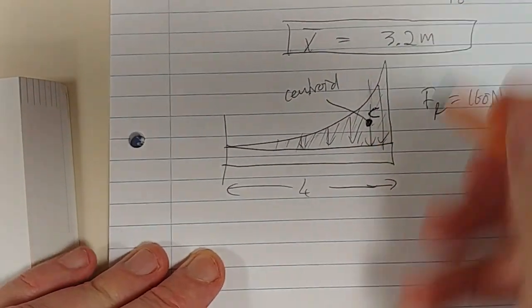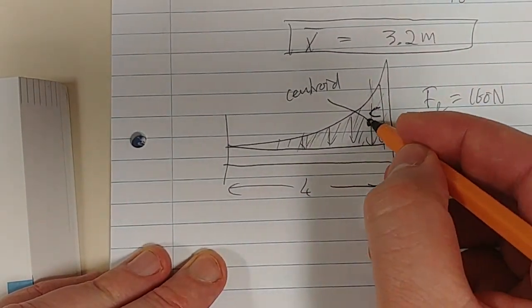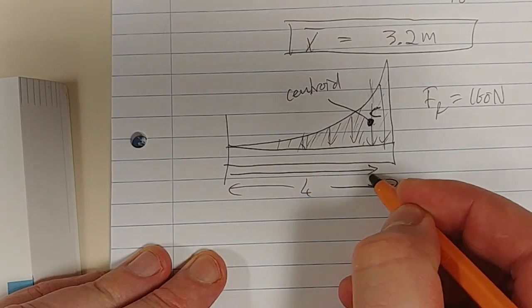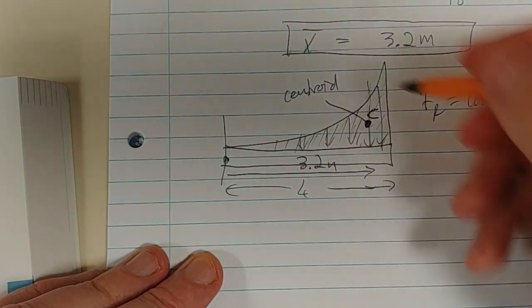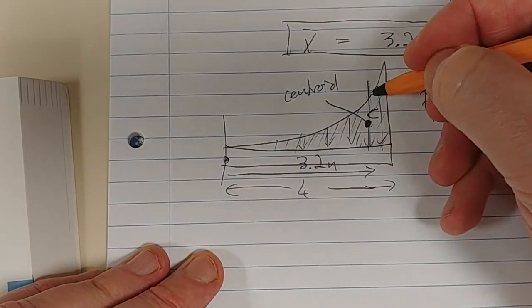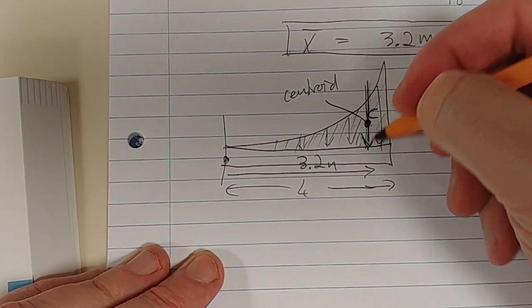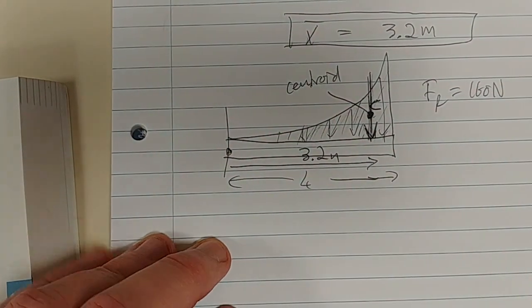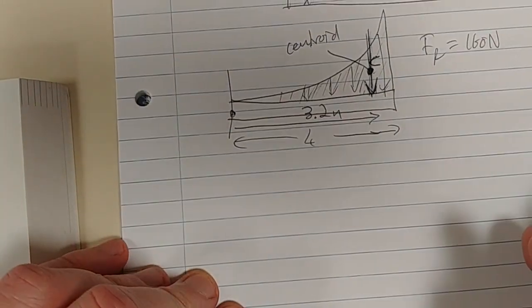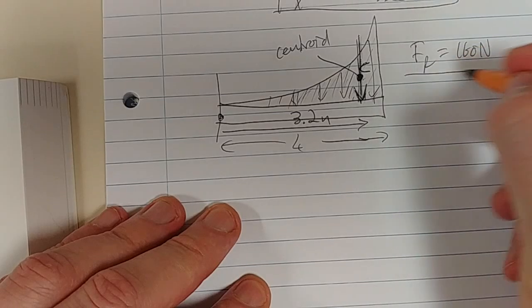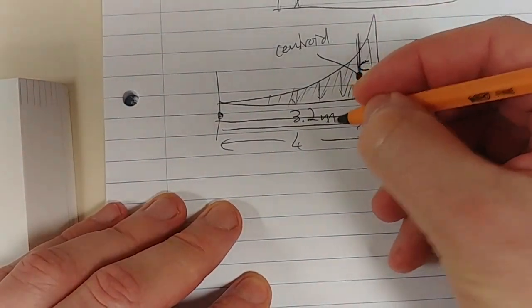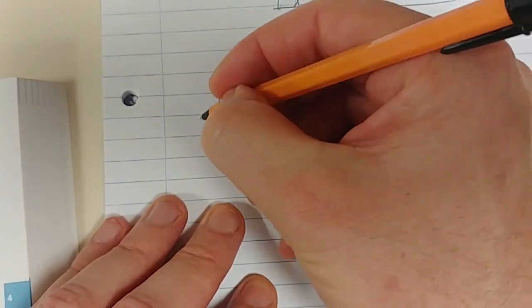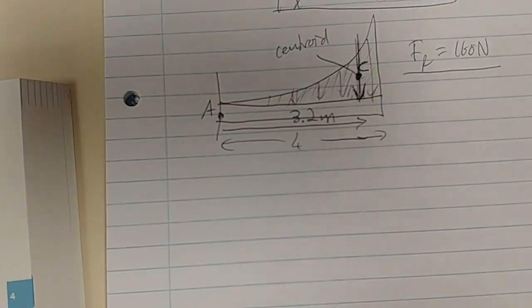This is what we get: x̄ equals 3.2, so the centroid acts at 3.2 meters from this left hand side, and that kind of tells us yeah we're kind of spot on. So check your gut feeling. That's the answer: FR is 160 and it acts at 3.2 meters from this point A, it says in the textbook. Cheers.